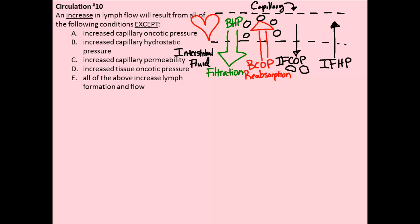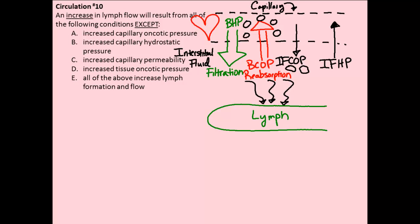What this problem is asking is about the tendency to form lymph — the influence of these pressures on lymph formation. Lymph is more likely to be formed if something either increases filtration or decreases reabsorption by bulk flow processes. We're looking for the factor that would not cause that — a situation resulting in less lymphatic flow. Let's go through each answer choice sequentially.